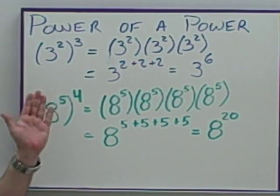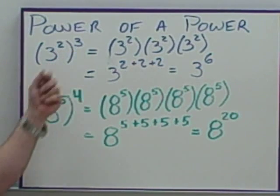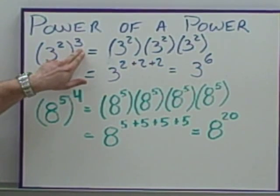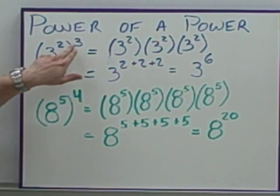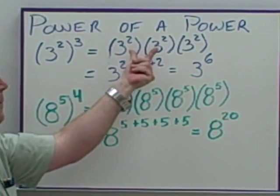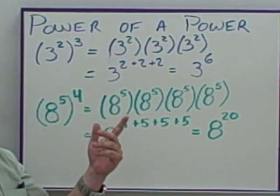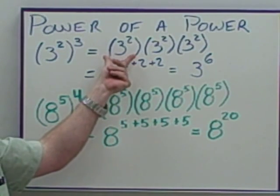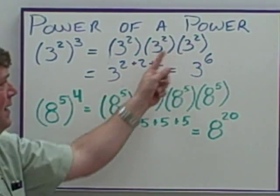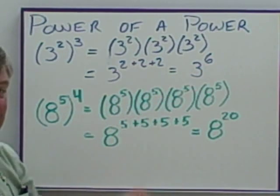Alright, power of a power. What is power of a power? That's when you're raising an exponent to an exponent. So this is 3 to the power of 2, to the power of 3 — 3 squared cubed — which means we're taking 3 squared and multiplying it by itself 3 times. Since we're multiplying like bases, we add the exponents: 2 plus 2 plus 2 gives me 3 to the 6th power.